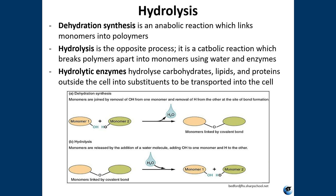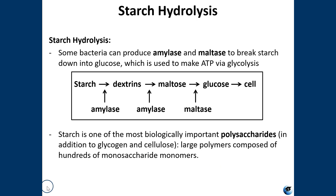Hydrolytic enzymes hydrolyze carbohydrates, lipids, and proteins outside of the cell into substituents that can be transported into the cell. Some bacteria can produce the enzymes amylase and maltase, which are used to break starch down into glucose, used to make ATP via glycolysis. Starch is one of the most biologically important polysaccharides — along with glycogen and cellulose — and is a large polymer composed of hundreds of monosaccharide monomers.